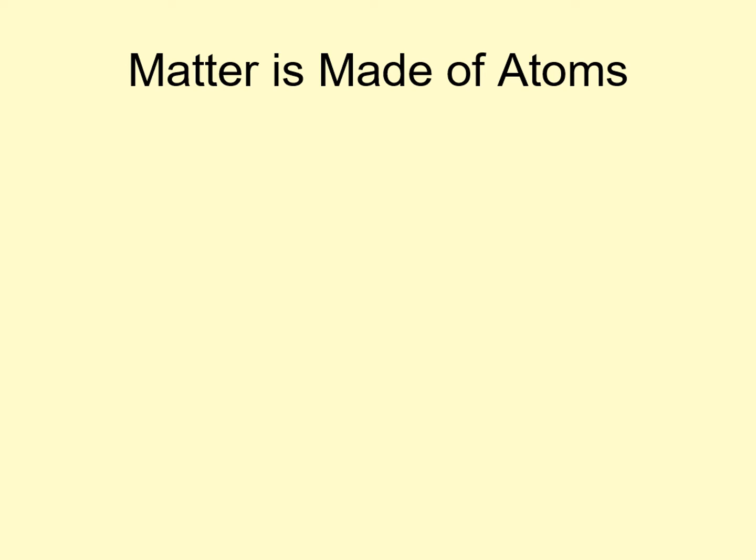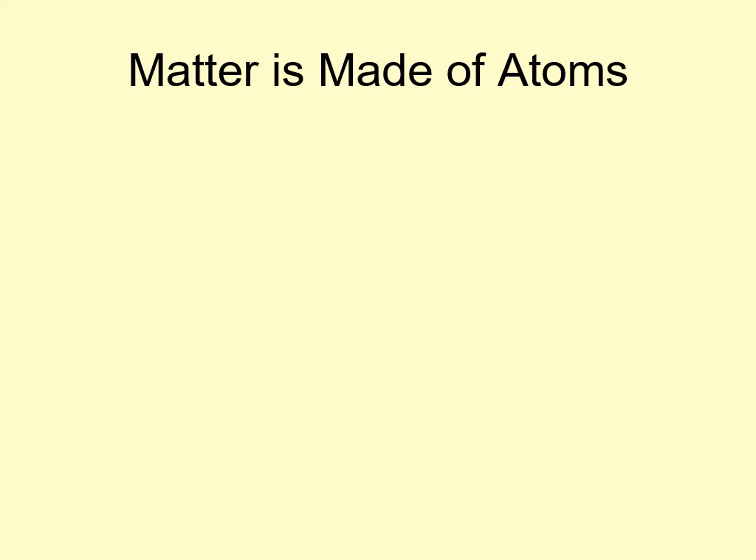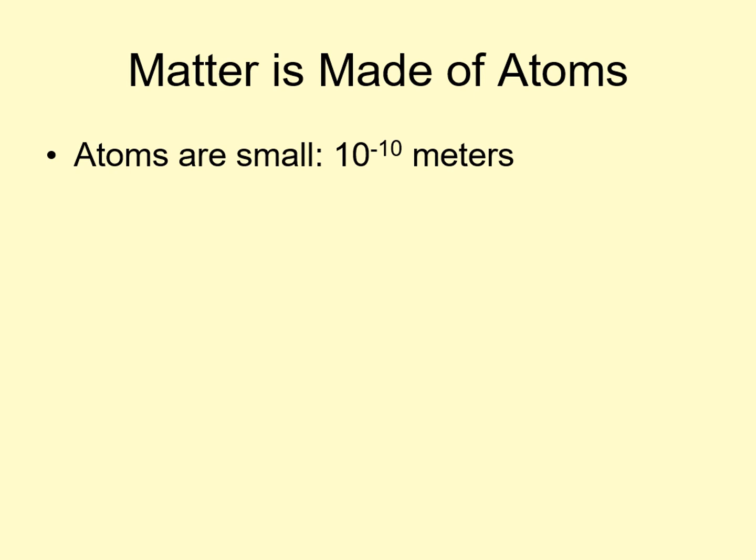Around 200 years ago, chemists started arguing that matter is made of discrete particles called atoms. This was already a very old idea — the name goes back over 2,000 years — but by the late 1700s, there were several experiments that strongly suggested that atoms were real. We now understand that atoms are incredibly small, typically 10 to the minus 10 meters across. This means if you made a line of 10 billion atoms, it would be only a meter long. Anything big enough for you to see without magnification is likely to have trillions of atoms or more.